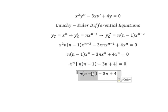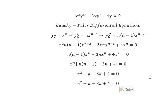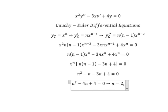We expand this and get n squared minus n, which gives us negative 4n. This becomes n squared minus 4n plus 4 equals 0. We have two solutions: n equals 2 and n equals 2.